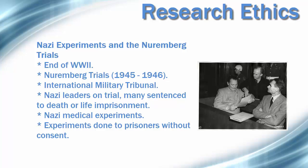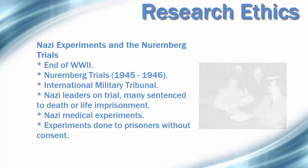The first and best known of these trials was the International Military Tribunal. Twenty-two of the most prominent captured Nazi leaders were tried before judges representing the four Allied powers: Great Britain, France, the Soviet Union, and the United States. Twelve of those convicted were sentenced to death, three were sentenced to life imprisonment, and four to prison terms ranging from 10 to 20 years. The tribunal also acquitted three of the defendants.